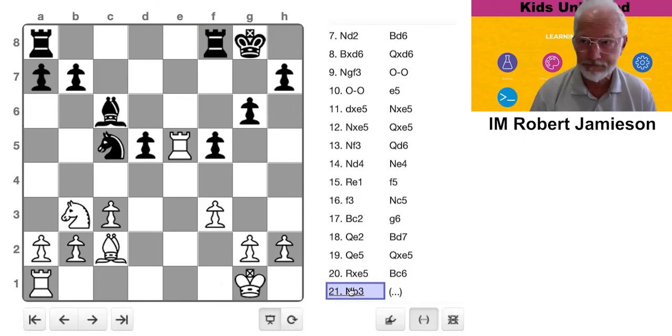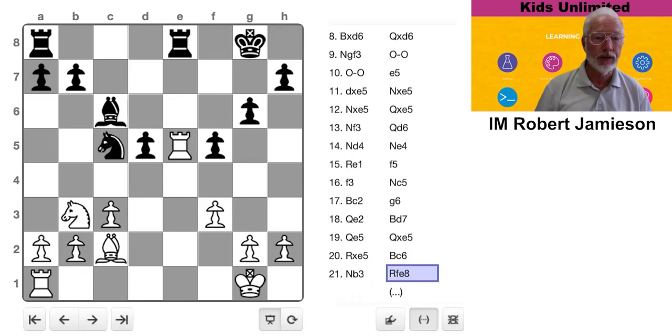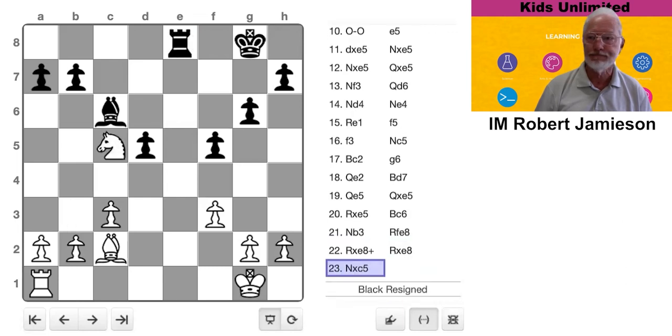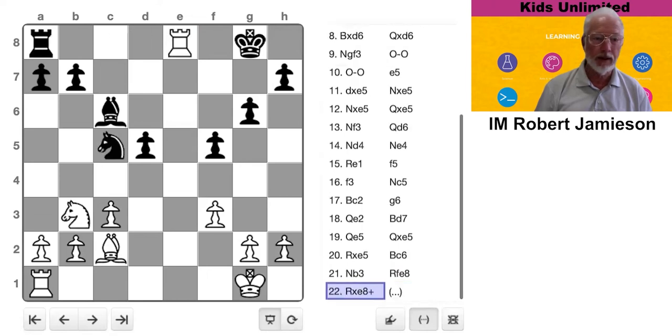Instead, he decided to do a terrible blunder. Now, normally, when your opponent makes a move, you have to say, what is he threatening? So I just played knight b3. So clearly, he should have said, what is white threatening? What is threatening knight takes knight? But he's such a bad player. He didn't even think of that. And he played rook fe8. So I went, let's swap and thank you for the knight. So I didn't have to grind him down positionally after all. He just collapsed in a big heap.